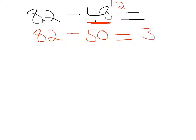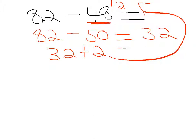So 82 minus 50 is 32, and then we go 32 plus 2, because we added that 2 right up there, which gives us an answer of 34.